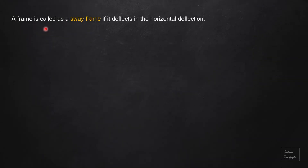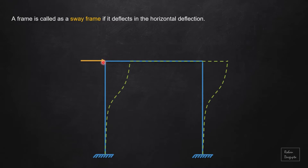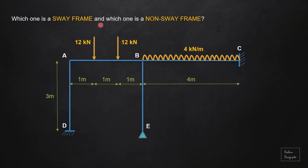A frame is called a sway frame if it deflects in the horizontal direction. Taking the same frame but now with a load acting differently on the beam section, the deflected shape will be something like this. As you can notice, the rigid joints have deflected towards the right, so there is a horizontal deflection — therefore this is called a sway frame.